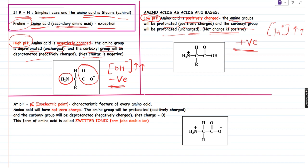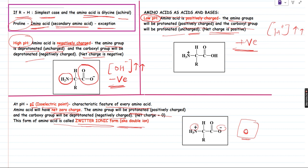But this is not always going to be the case. At a given pH called pI — the isoelectric point — which is going to be a very important characteristic feature of every amino acid, the amino acid will have a net zero charge. Because at this particular pH, the amino group will be protonated and positively charged, and the carboxyl group will be deprotonated and negatively charged. The positive and negative nullify each other, giving a net zero charge. This form of the amino acid is called the zwitterionic form, also known as the double ion.